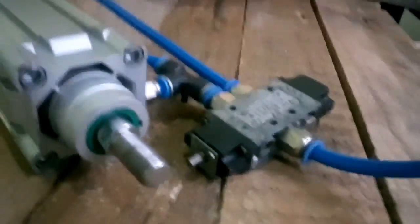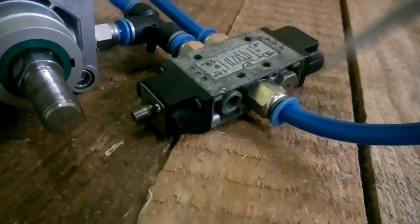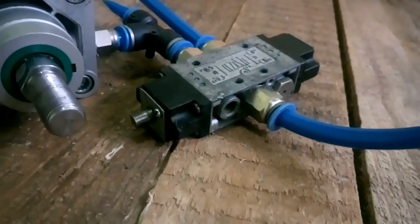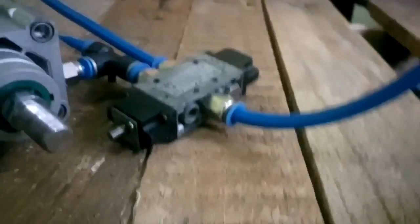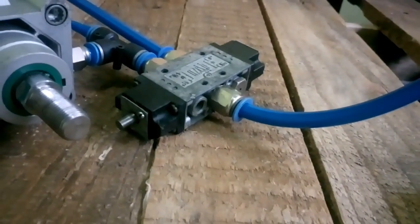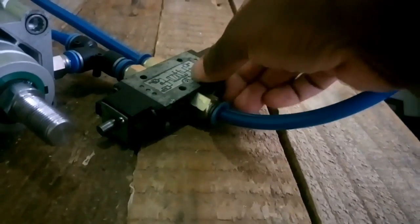The reason is this restrictor here is restricting the air only in one instance—that's when it was retracting, right? So if you exchange these from this side and put it on the other side, you see that our cylinder behaves differently.